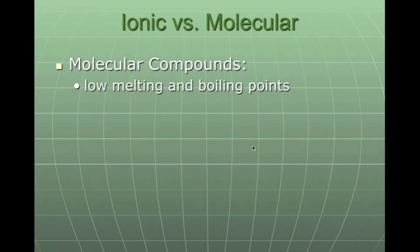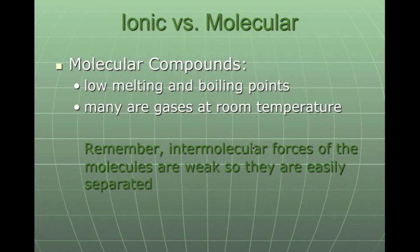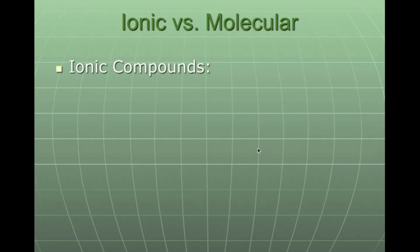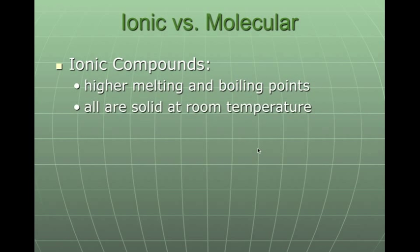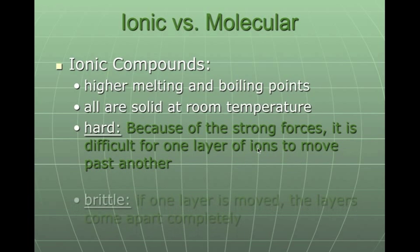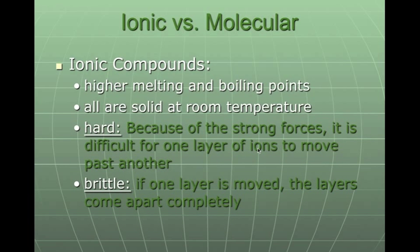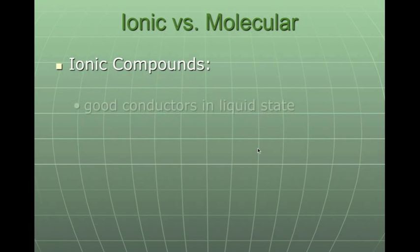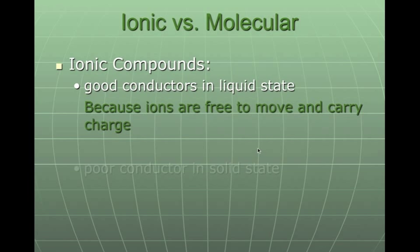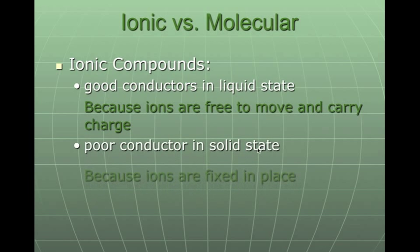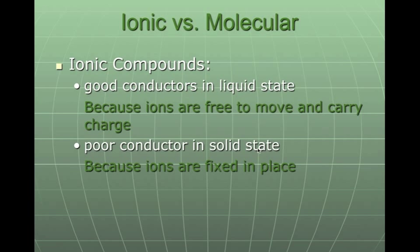Molecular compounds, because they can't hold on to each other very well, have very low melting points and very low boiling points, and it's because of those intermolecular forces. Ionic compounds, on the other hand, have very high melting points and very high boiling points, which makes them very hard and very brittle. Ionic compounds are very good conductors of electricity in the liquid state and very poor conductors in the solid state. Covalent compounds aren't good conductors of electricity at all. Ionic is one way, covalent is the exact opposite.